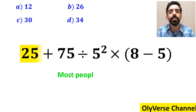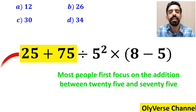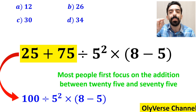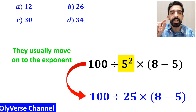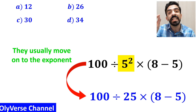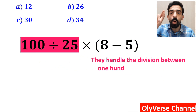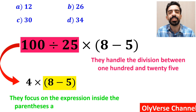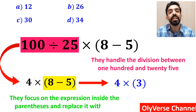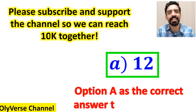To solve this question, most people first focus on the addition between 25 and 75 and rewrite the whole expression as 100 divided by 5 to the power of 2 multiplied by (8 minus 5). In the next step, they move on to the exponent and rewrite this as 100 divided by 25 multiplied by (8 minus 5). Then they handle the division between 100 and 25, replacing the expression with 4 multiplied by (8 minus 5). Finally, they focus on the expression inside the parenthesis and replace it with 3, making the expression 4 multiplied by 3, which gives the answer 12. They quickly look at the options and choose option A as the correct answer. However, it's not the correct answer.